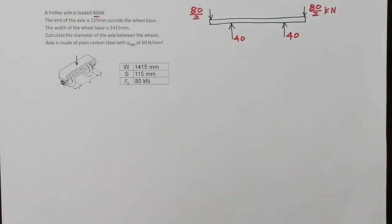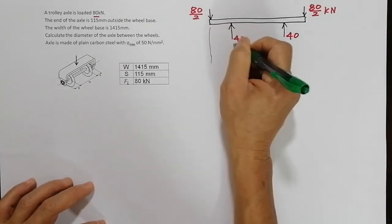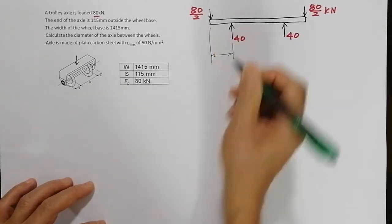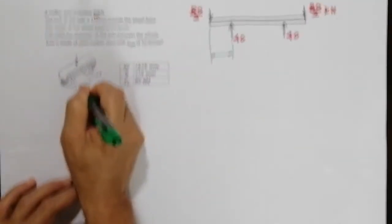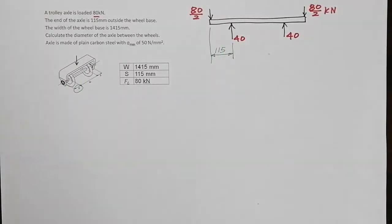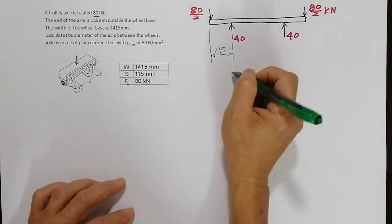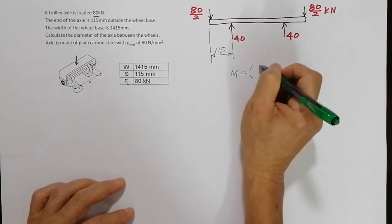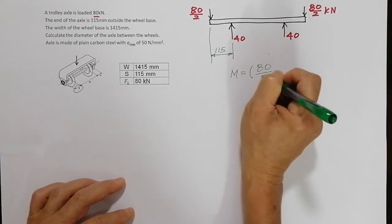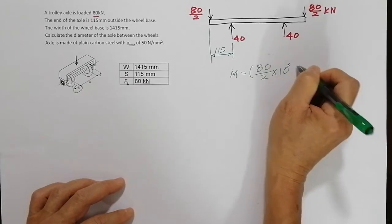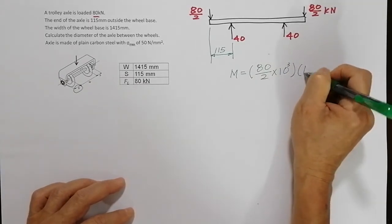Now let's get the one value we need to know, which is the distance from here to here. It was given x here, 115, so basically I can start working on it now. I say moment, you have force, 80 over 2, because it's kilonewtons I have to multiply by 10 to the power of 3, and the distance is 115 millimeters.